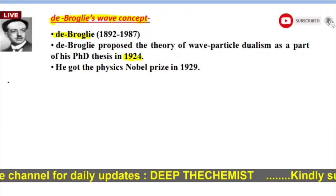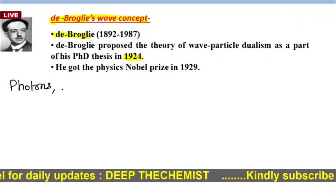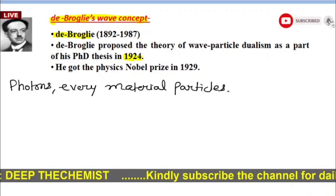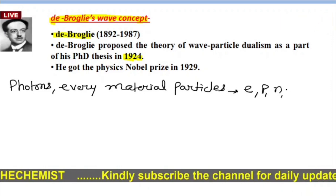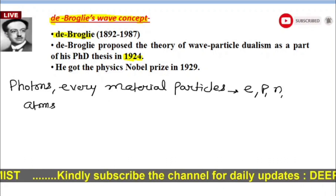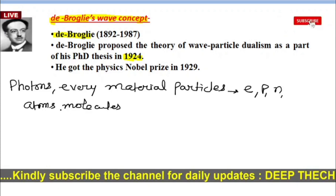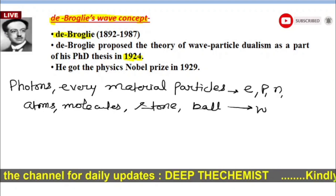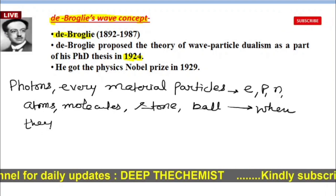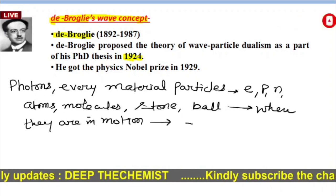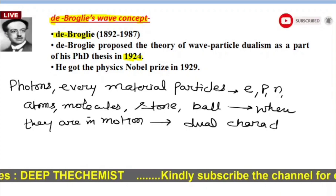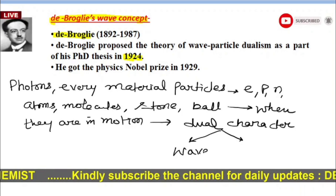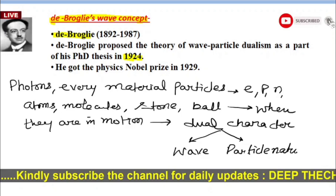He suggested that like photons, every material particle — electrons, protons, neutrons, atoms, molecules, and not only atoms and molecules but also macroscopic objects like a stone or a cricket ball — when they are in motion, they possess dual character. Dual character means they behave as a wave as well as they show particle nature.